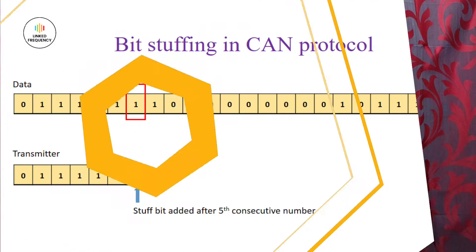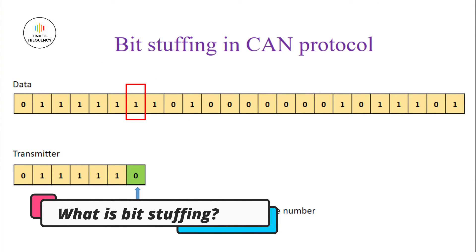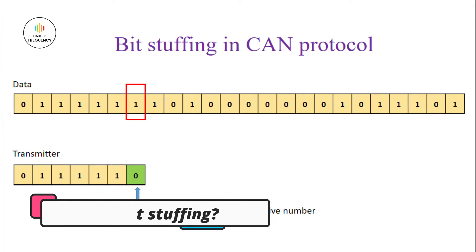Let's jump onto our screen to understand more about Bit Stuffing with an example. If a frame has more than five consecutive bits of the same polarity, then insertion of a bit of opposite polarity after the fifth consecutive bit of same polarity is known as Bit Stuffing. Bit Stuffing helps to maintain synchronization between the transmitting and receiving nodes of the communication network, even when the data contains long sequences of identical bits.